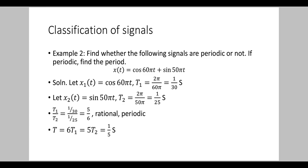After finding T1 and T2, take the ratio T1/T2 = (1/30)/(1/25) = 25/30 = 5/6, which is a rational number. So we can say that the sum is periodic. To find the time period, T = 6·T1 = 5·T2 = 1/5 second.